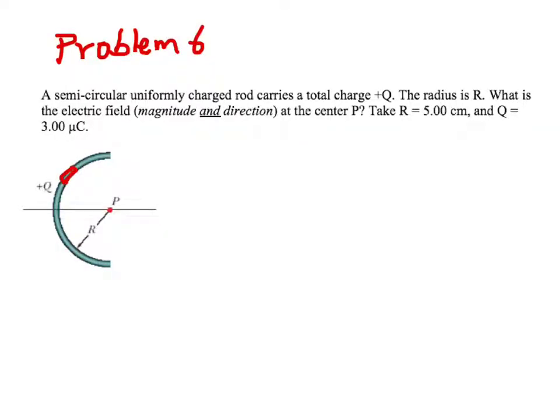Okay, here's problem number 6 from assessment number 2. Once again, it's a uniform distribution of charge, a semicircular rod carrying a total charge Q and is distributed uniformly along its length. And you're asked to calculate the electric field at point P due to this continuous distribution of charge.